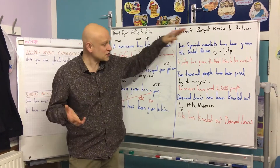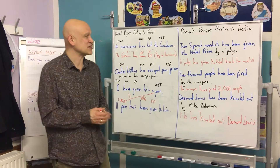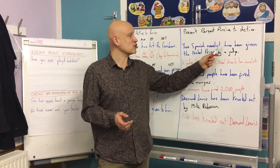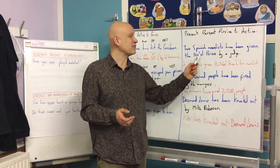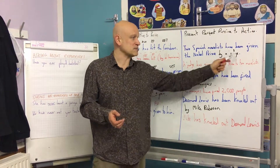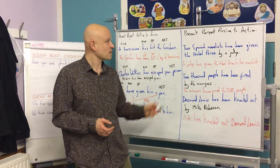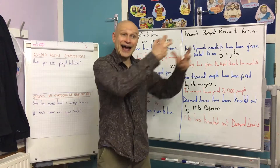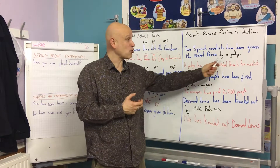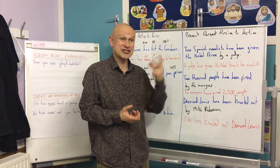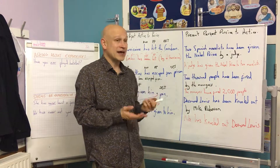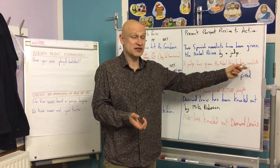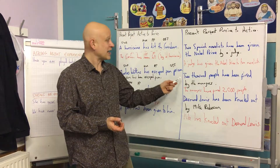Over here we started with passive sentences. 'Two Spanish novelists have been given a Nobel Prize by a judge,' but then we decided we're going to make it active again to show what the judge did: 'A judge has given the prize to the novelists.'